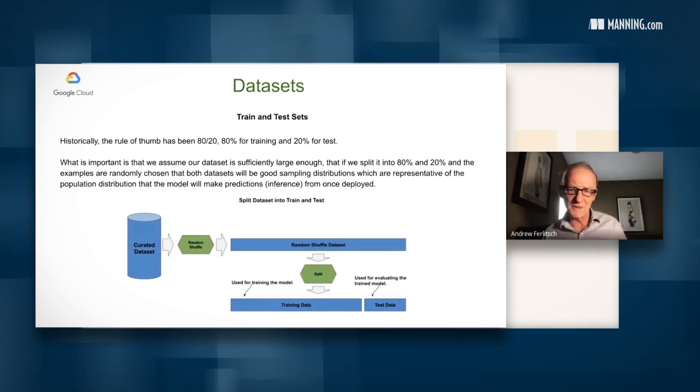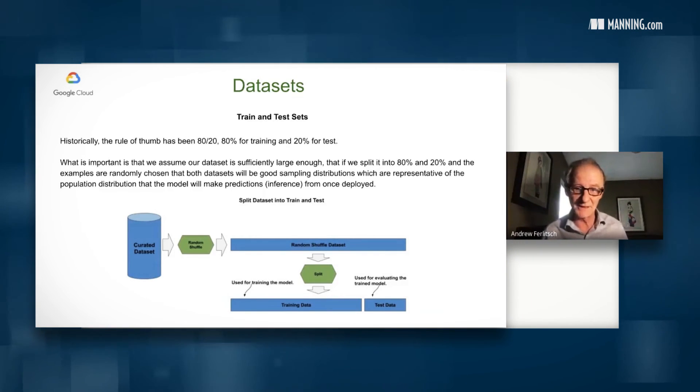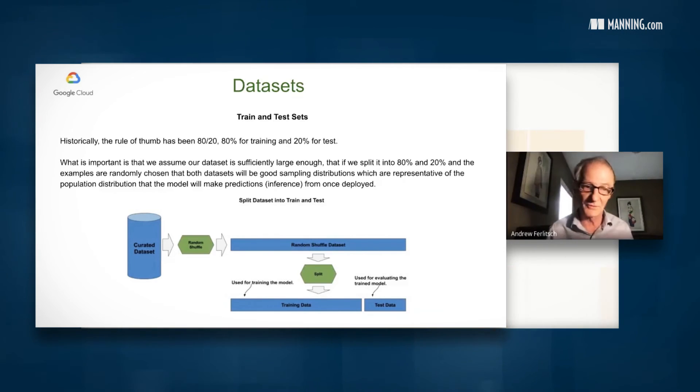Now, there are various rules or methodologies of how to split the training and test data. But for this purpose, I'm going to start with a historical rule. It's kind of arbitrary. You took 80% of your data for training and 20% for test.